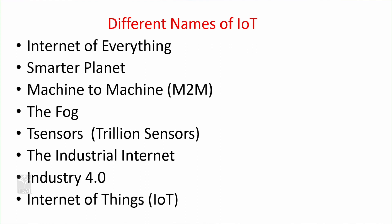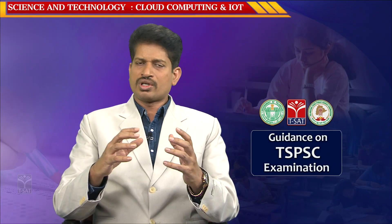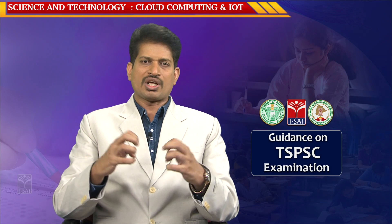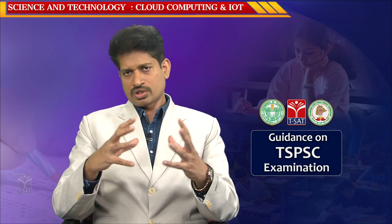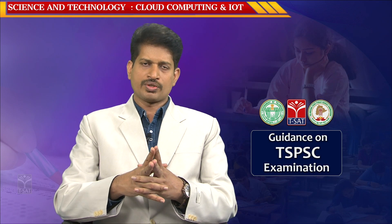Internet of Things has different synonymous words: smart planet, machine-to-machine communication, the fog, tensors, the industrial internet, industry 4.0. The basic thing in Internet of Things is you have certain devices, systems, and connectivity with the help of software, where you are able to control systems across the globe for your advantage.